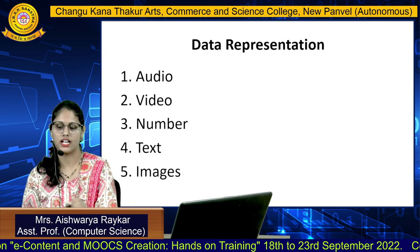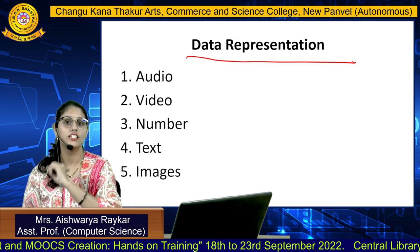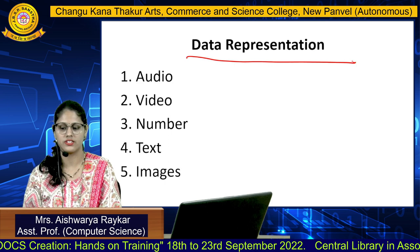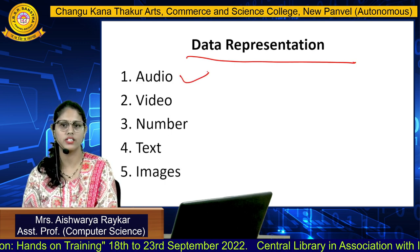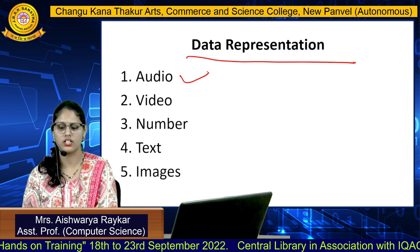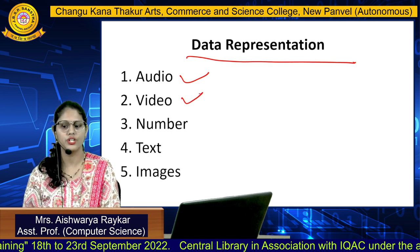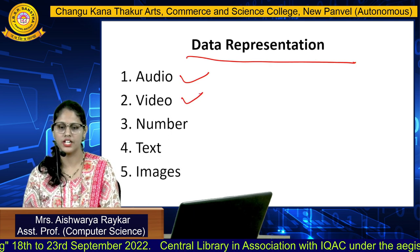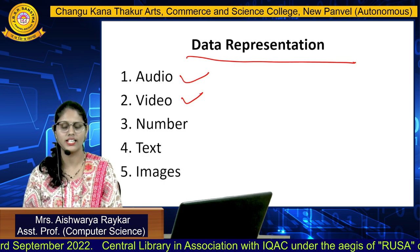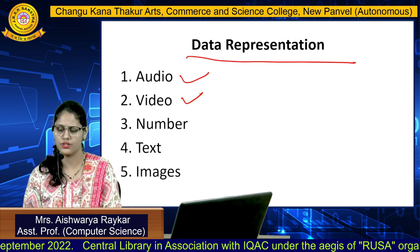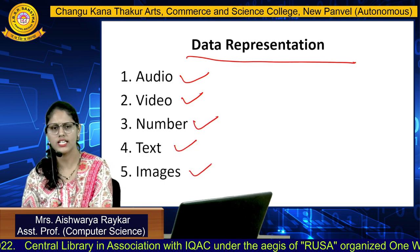Let's have a look at the ways in which we can represent data. This is very simple: audio, which is nothing but sound or music; video, which can be a continuous entity that we shoot or a combination of images; and also numbers, text, or images.